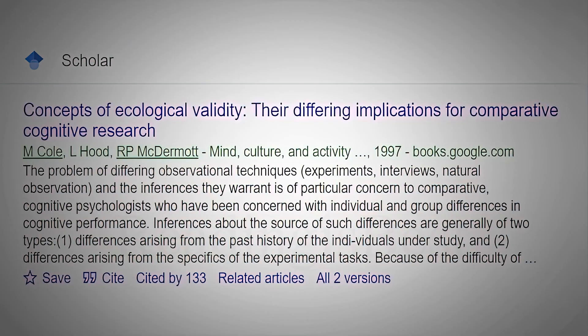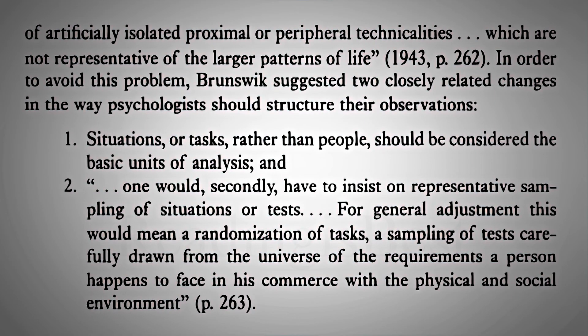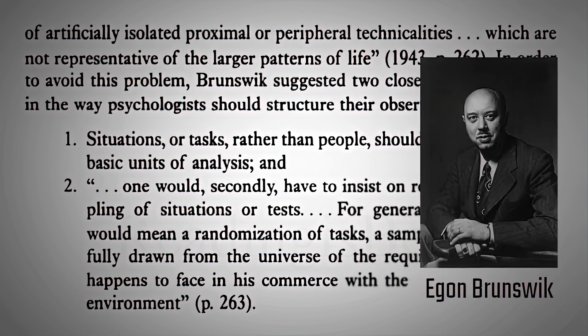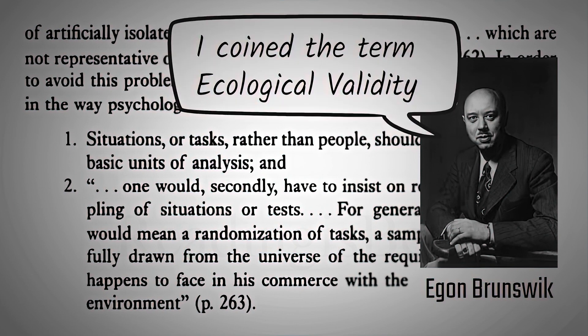In the article 'Concepts of Ecological Validity: Their Differing Implications for Comparative Cognitive Research,' Michael Cole, Louis Hood, and Raymond P. McDermott put forth the idea by psychologist Egon Brunswick to prevent the problems of research not representing the larger patterns of life. As per Brunswick, situations or tasks, rather than people, should be considered the basic units of analysis, and sampling of tasks and situations should be representative of the universe a person happened to face in his physical and social environment. Egon Brunswick was the person who coined the term ecological validity.